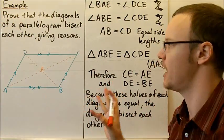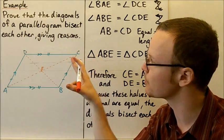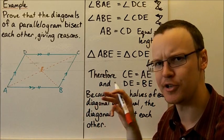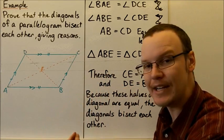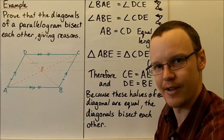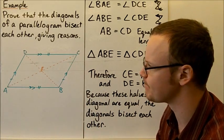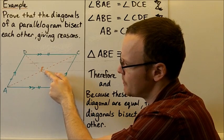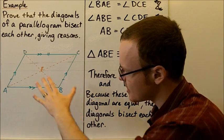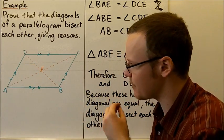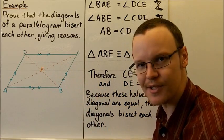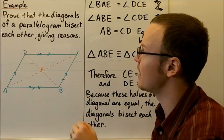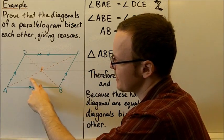Looking at an example — it's quite a tough example. We're looking to prove that the diagonals of a parallelogram bisect each other, and we must give reasons. We have a diagram of a parallelogram called ABCD, with the centre point — the midpoint of the diagonals — called E. Using those diagonals, we've divided it into triangles, and we can look for congruent triangles to prove that these lines bisect each other.